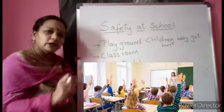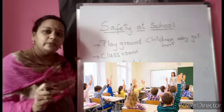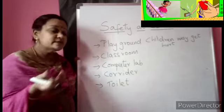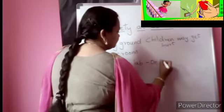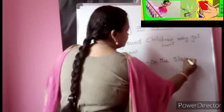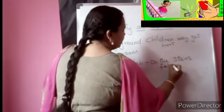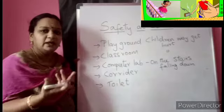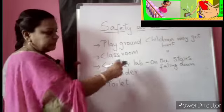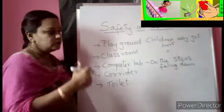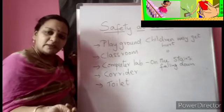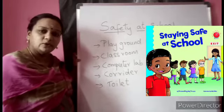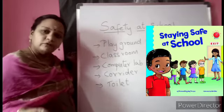In the computer lab — why I mentioned the computer lab is that when you want to reach it, you will be climbing the stairs. When you are climbing the stairs, some may slip and fall down, and falling down and getting hurt is possible. In the classroom also, children may get hurt, but we will see the reasons for that later. When you are on the stairs, some may fall down and they may also get hurt. And in the corridor, there is also a possibility of children falling and getting hurt.